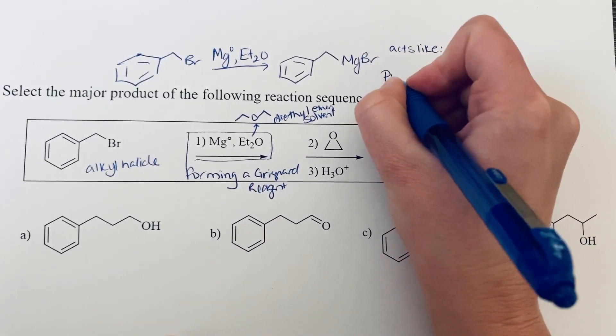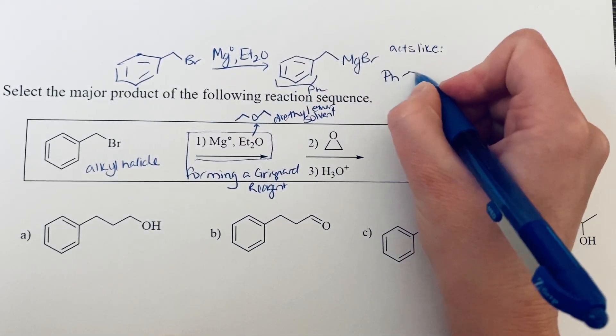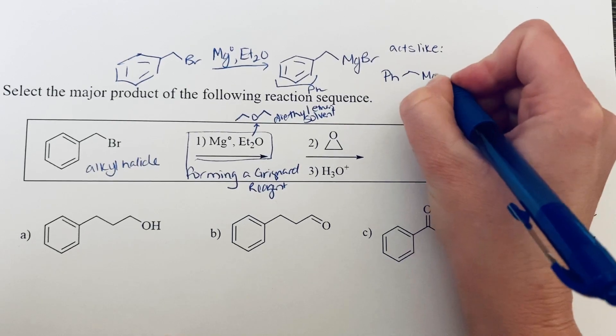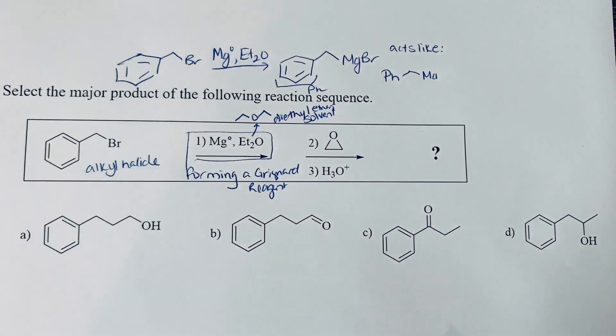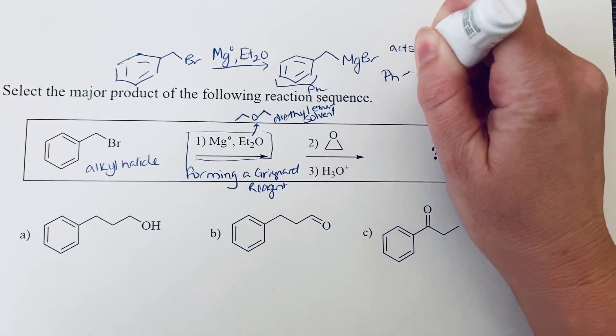So it's going to act as though, and I'm going to abbreviate the benzene ring as phenyl, so it's going to act as though we have a negative charge on that carbon. So let me erase this quickly. I didn't want to draw that covalent bond.